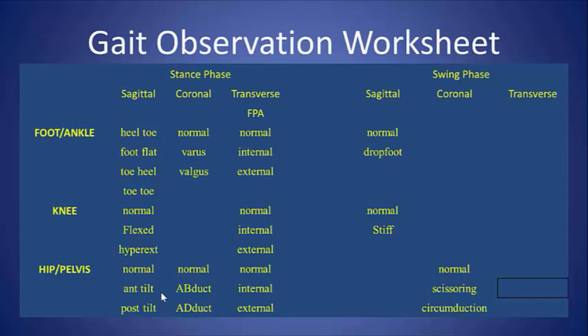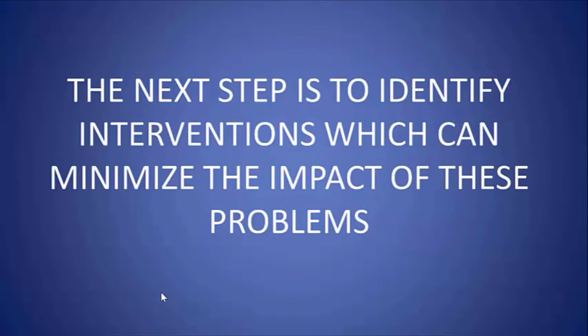It is useful to have a gait observation worksheet where you look at the sagittal, coronal, and transverse planes at each joint separately, noting where any abnormalities may exist in both stance phase and swing phase. Then you can develop interventions — be it orthotics, botulinum toxin, physiotherapy, or surgery — to try and minimize the impact of these problems.